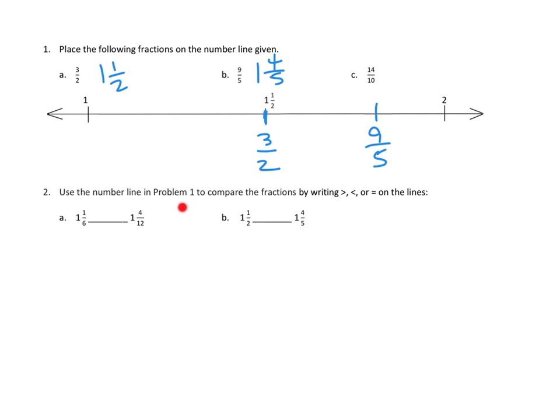Let's look at number 2. Use the number line in problem 1 to compare the fractions by writing greater than, less than, or equal to on the lines. Let's look at what we've got. The first one, we're asked to compare 1 and 1 sixth with 1 and 4 twelfths. One thing I noticed about 1 and 4 twelfths is that it looks like we could divide the numerator and denominator by 4 to make this fraction a little simpler.